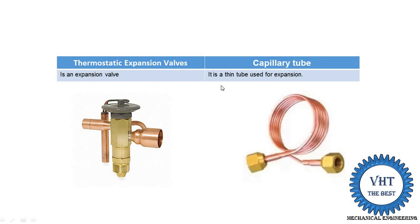In a thermostatic system we use the expansion valve, and in another type of system we use the capillary tube. After understanding the total difference, we will know in which condition we use the expansion valve and in which condition we use the capillary tube. This is the basic difference.